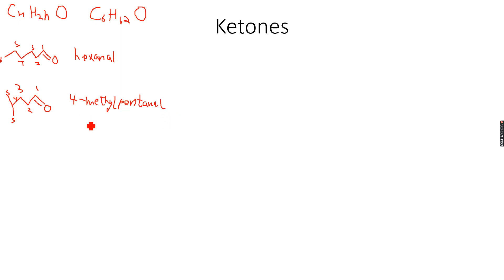Does 4-methylpentanal have any stereoisomers? No, because it does not have any carbon-carbon double bonds, nor does it have any chiral centers. So let's move on to making another isomer for hexanal.